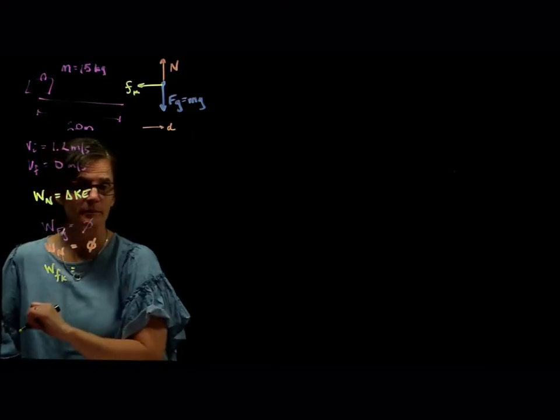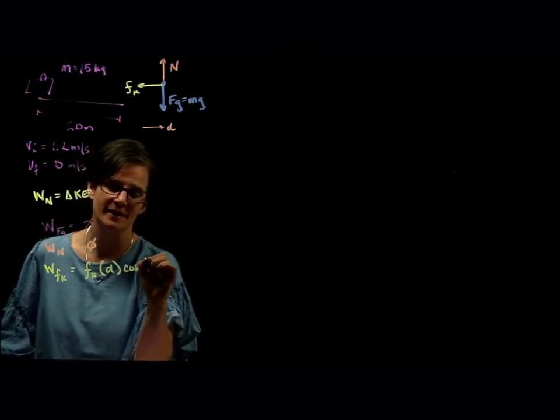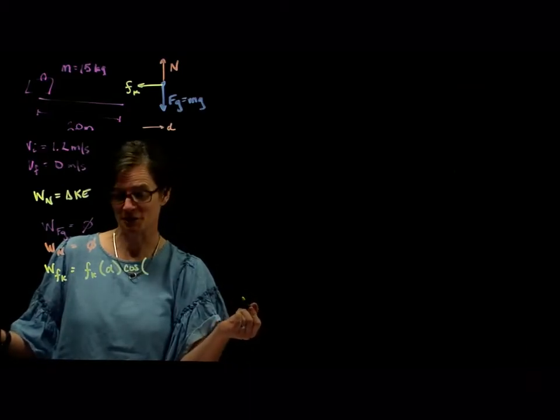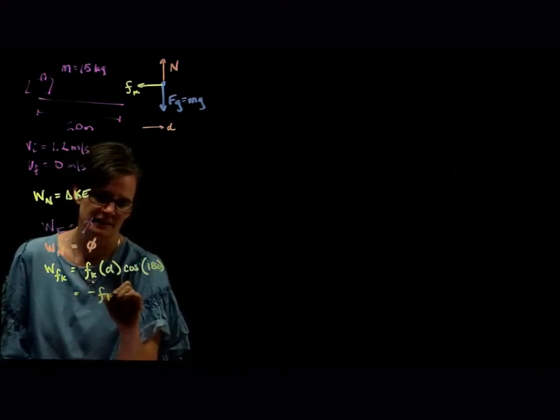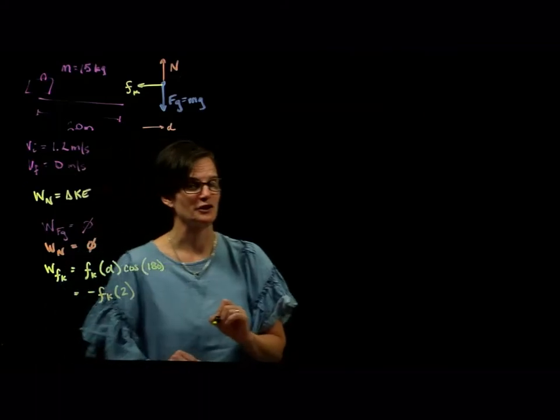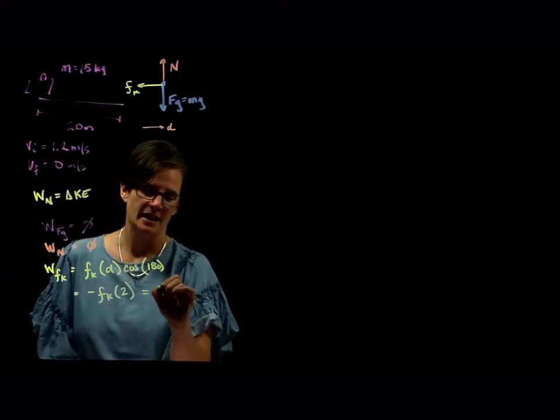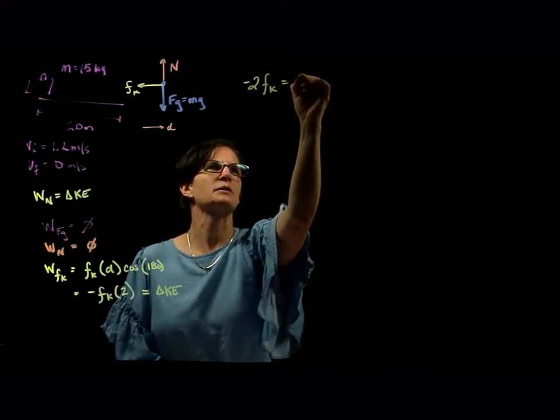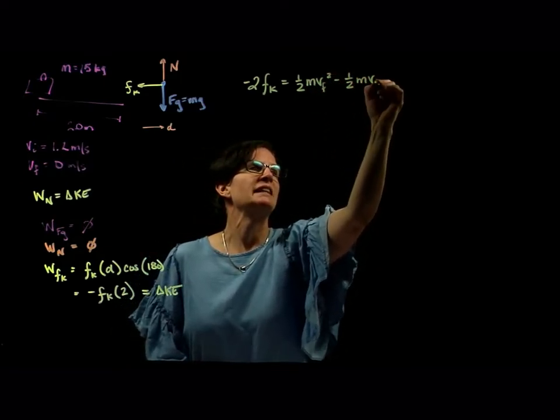But what about friction? Indeed, there is work being done by the force of friction. It's that force of friction times the distance times the cosine of the angle between the distance and the frictional force, which is 180 degrees. And so we find that the force of friction times 2 is equal to our work done by friction. And so since that is the only work being done on the object, that's equal to our change in kinetic energy. So -2f_k = -1/2 m v_f^2 - 1/2 m v_i^2.